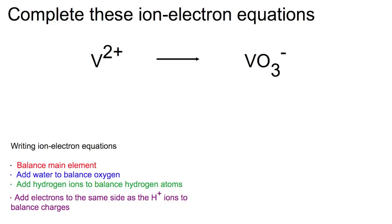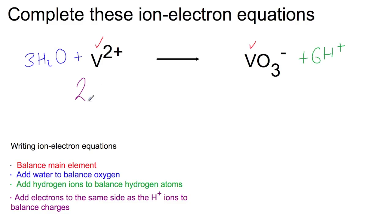Second example: the vanadium is balanced — one on each side — so go straight to adding water to balance the oxygen. There are 3 oxygens, so add 3 water molecules. Then add 6H⁺ to balance the hydrogens. Checking charges: 2+ on the left, and 6 minus 1 equals 5 on the right. Add 3 electrons to the right to bring it down to 2.